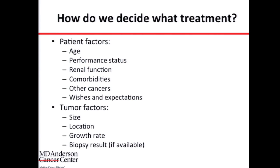We also have to consider tumor factors: how big is the tumor? If it's one centimeter, we can afford to wait before treating. But if it's already 10 centimeters, we don't have much time. Tumor location matters too — whether ablation or surgery is feasible. If the patient is being observed, we gain data on how fast the tumor grows. A spot at one centimeter that is 1.1 centimeter three months later can be watched for another three months while we re-evaluate options.